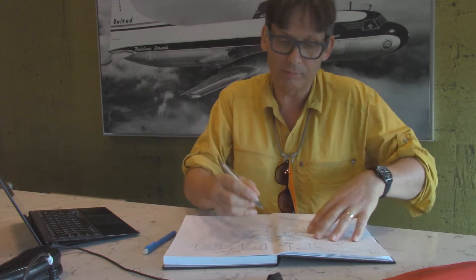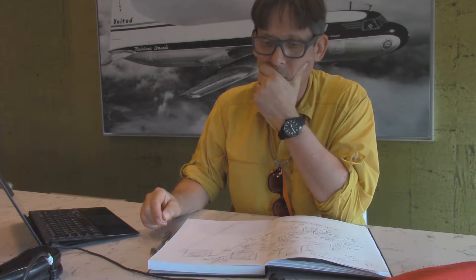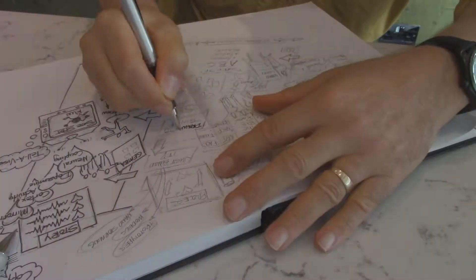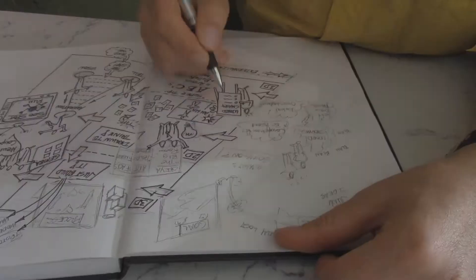So a little different sketchnoting process here. I need a really neat, crisp, clean concept drawing for this conference I'm going to that I'm going to be teaching from. So instead of just sketching and coloring, I'm actually penciling first, sketching with pencil first, then inking it in.